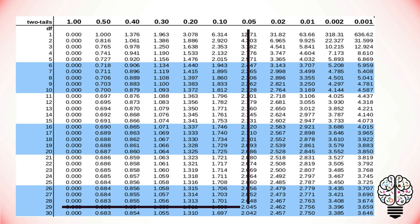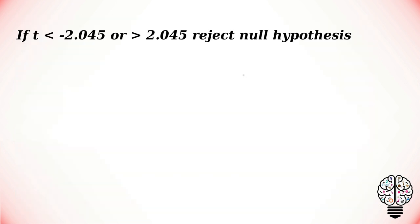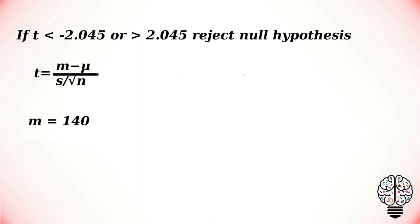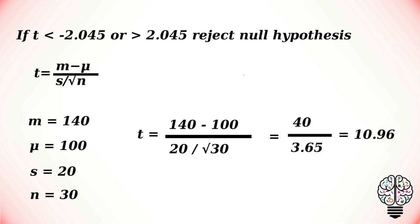We find the value corresponding to degrees of freedom 29 and alpha 0.05, and we get 2.045 as the critical value. We will reject the null hypothesis if t is less than −2.045 or greater than 2.045. The formula for the one-sample t-test is: t = (sample mean − population mean) / (sample standard deviation / √sample size). Here, the sample mean is 140, population mean is 100, standard deviation is 20, and sample size is 30. Calculating this gives t = 10.96.